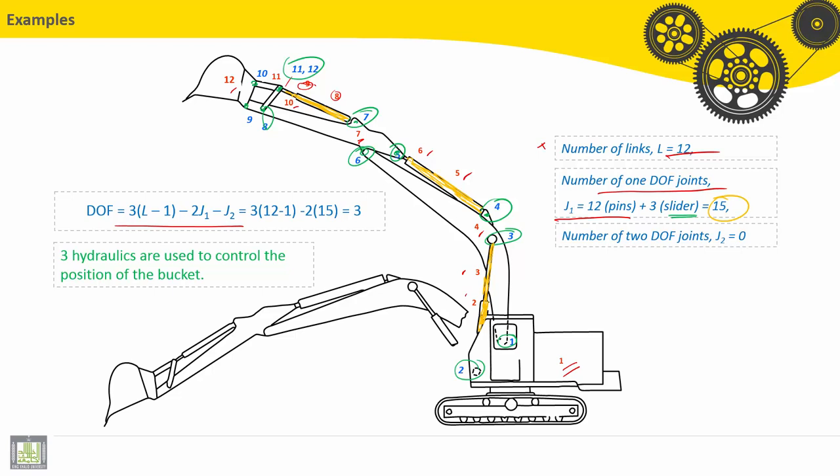And we haven't here higher pair joints, two degree of freedom joints. Now we have to calculate the mobility or degree of freedom. 3(12-1) - 2(15) equals 3. So three degrees of freedom here for this mechanism.